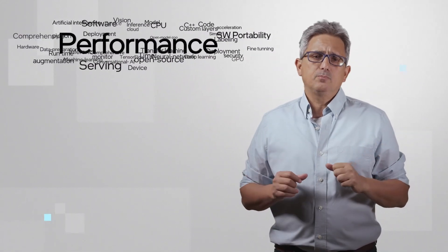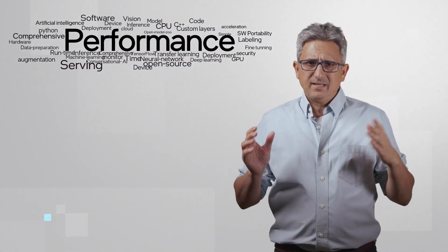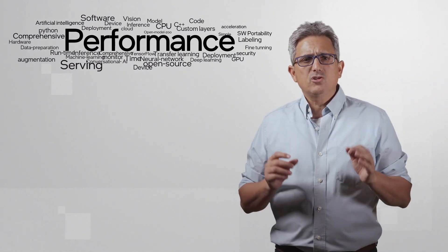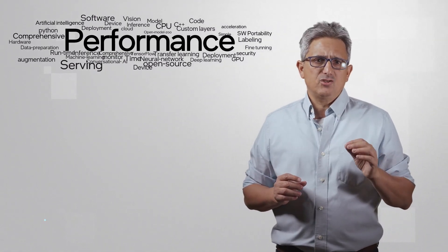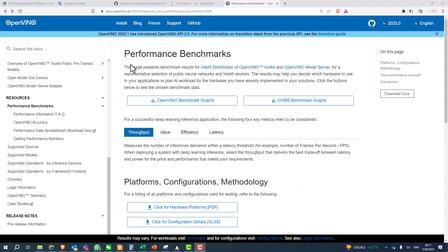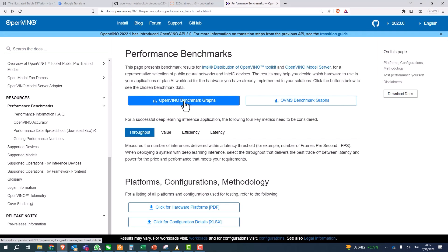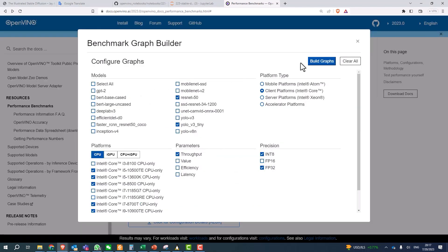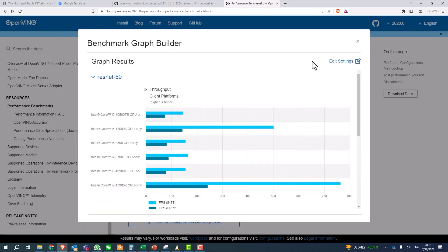The third is performance. OpenVINO depends of course on the model. Usually runs faster and more memory efficient than the alternatives. Just Google OpenVINO performance, choose your preferred benchmark, choose a platform and explore the performance results.